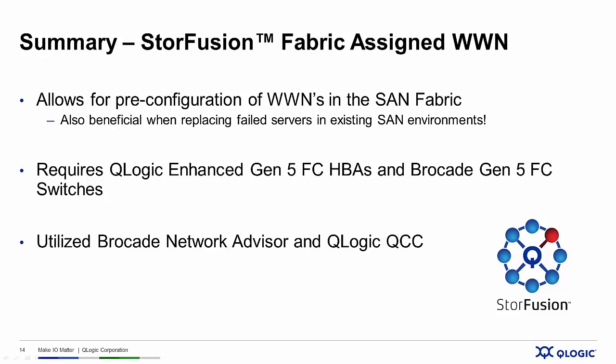In summary, StoreFusion's Fabric Assigned Worldwide Name feature allows a SAN administrator to pre-configure the entire SAN without having all the physical pieces in place — the servers and Fiber Channel adapters don't need to be there — saving lots of time and simplifying the overall project. A secondary benefit is that if a server fails, you can wheel in a new server, plug it into the SAN, and assuming you have QLogic Enhanced Gen5 Fiber Channel HPAs, the HPA will read the Fabric Assigned Worldwide Name and you'll be up and running in minutes — no SAN reconfiguration required. For this functionality you need QLogic Enhanced Gen5 Fiber Channel HPAs, Brocade Gen5 Fiber Channel Switching Fabric, Brocade Network Advisor, and QLogic's QConverge Console.